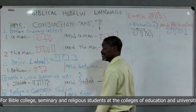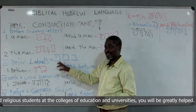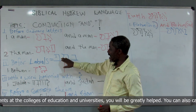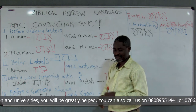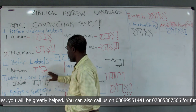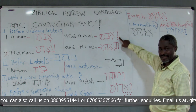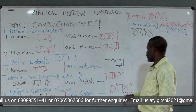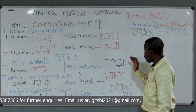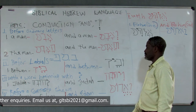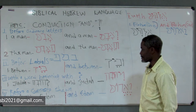Now, before the labials — some letters are called labials: bet, mem, and pe. Any word that begins with one of these three labial letters uses a different form. For example, 'between' is 'ben,' which starts with the labial 'bet.' So 'and between' does not become 'waw-ben'; instead it becomes 'u-ben,' because labials cause the conjunction to change to 'u.'